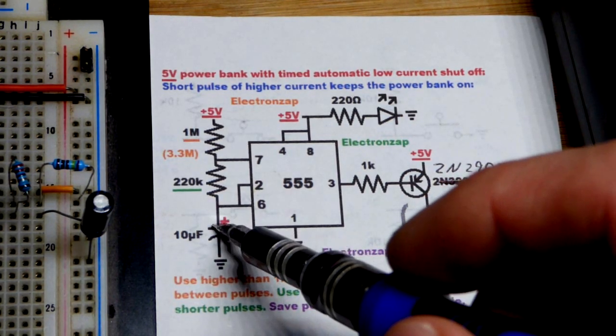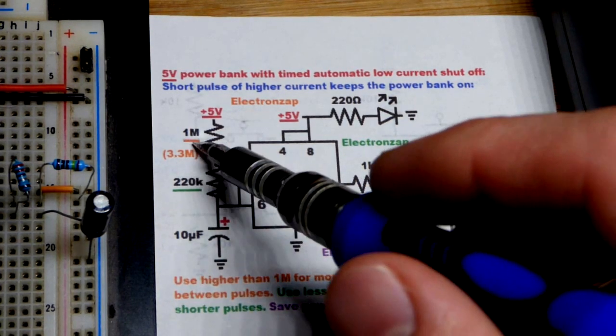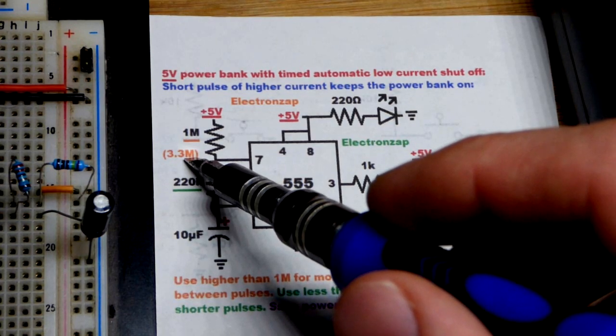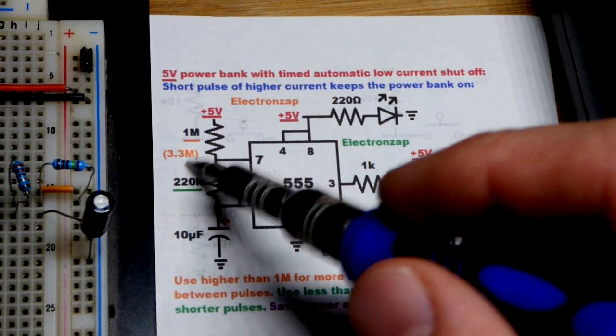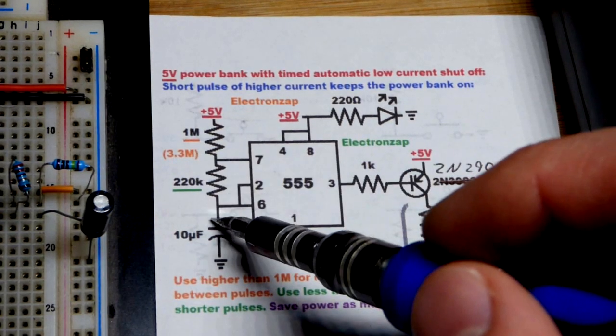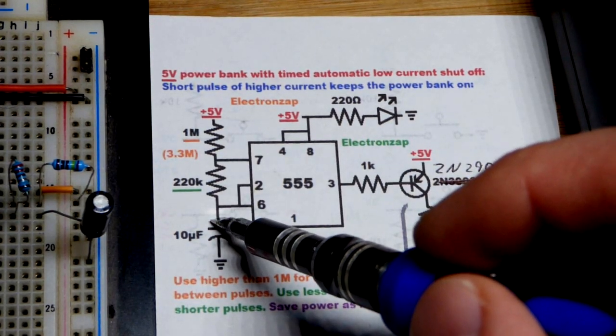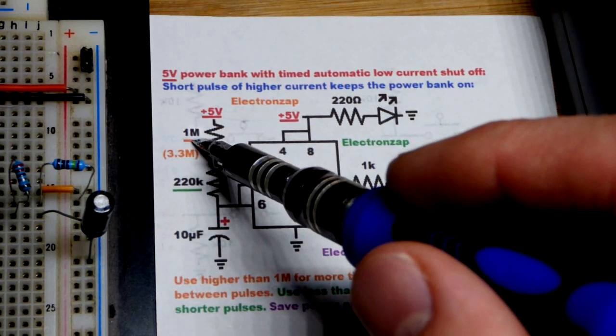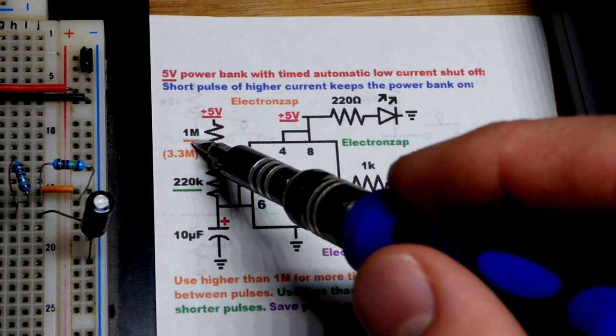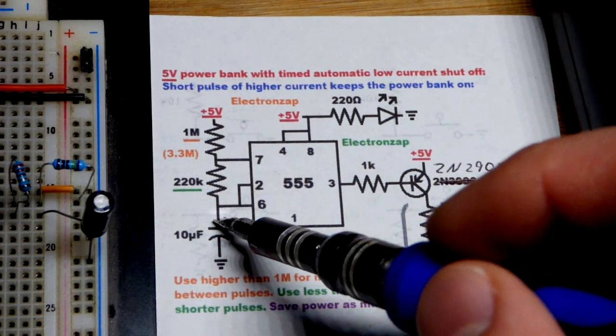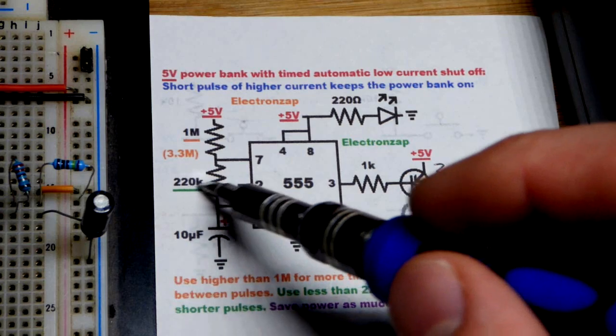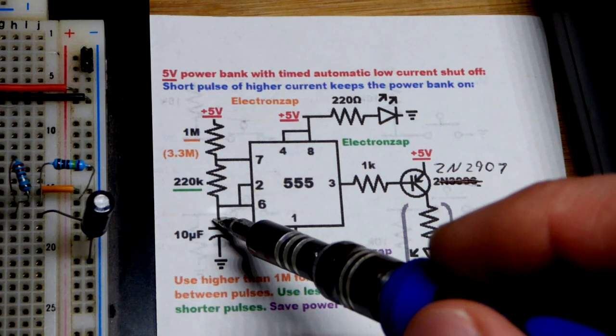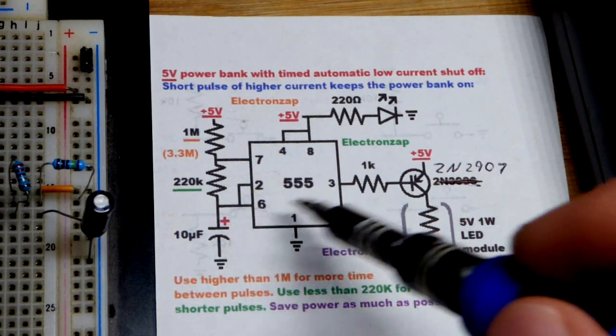That was probably fast enough, or long enough period of time for whatever power bank I tested this with. If it's flashing too fast we could use a higher value resistor, if it's not going fast enough we could use a lower value resistor. I'm using 1 million ohms here though, so that's going to determine how long it takes to charge, plus we got 220,000 so that's also going to add to the time.